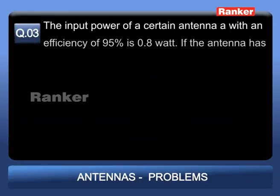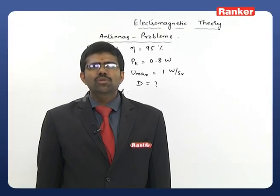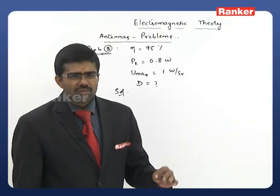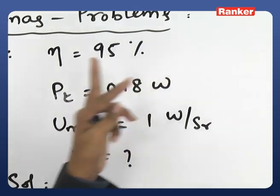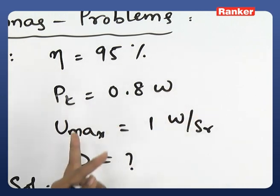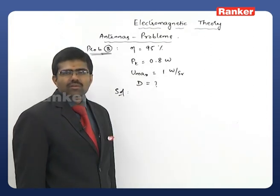Problem 3: The input power of a certain antenna with efficiency of 95% is 0.8 watt. If the antenna has maximum radiation intensity of 1 watt per steradian, its directivity is: Option A: 5.26; Option B: 16.53; Option C: 0.76; Option D: 9.55.